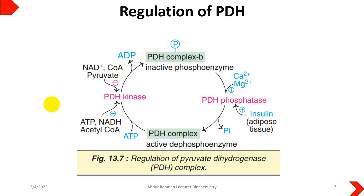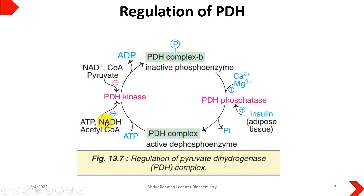Now we come to the regulation of pyruvate dehydrogenase. When the PDH complex is in its dephosphorylated form, it is in the active form, while in the phosphorylated form it is inactive. When there are large amounts of ATP, NADH, and acetyl-CoA in the cells, that stimulates PDH kinase to phosphorylate the PDH complex, making it inactive so no more pyruvate is converted to acetyl-CoA.